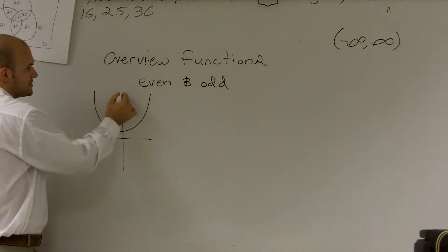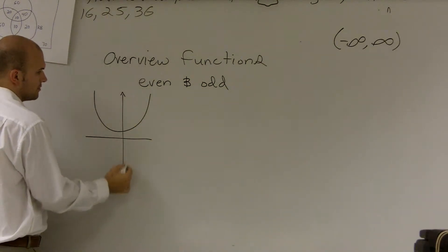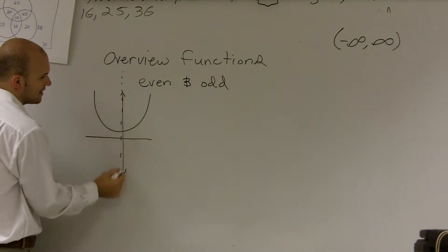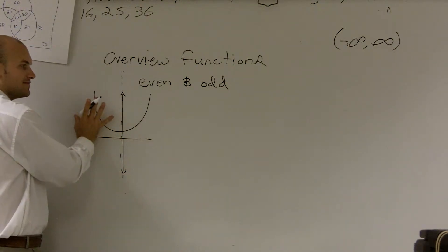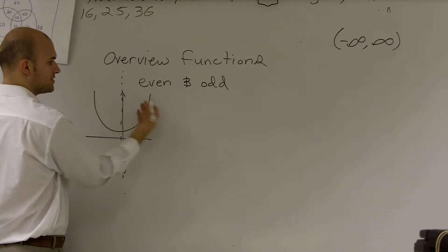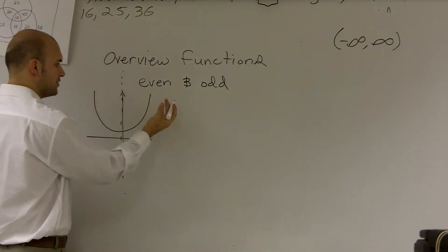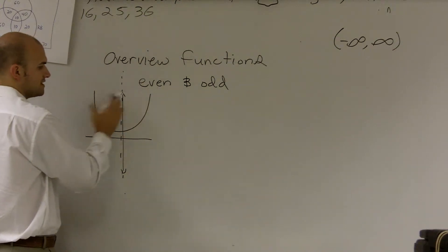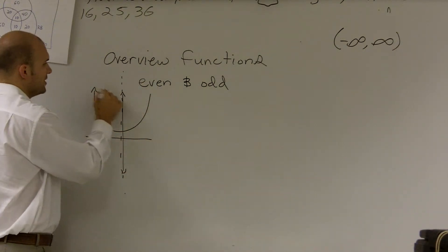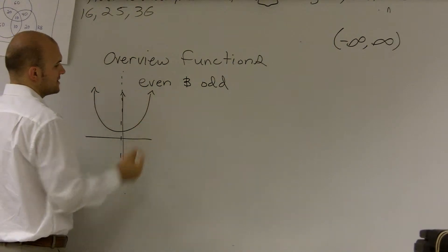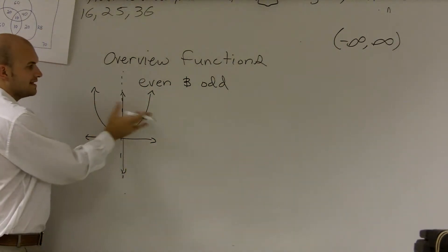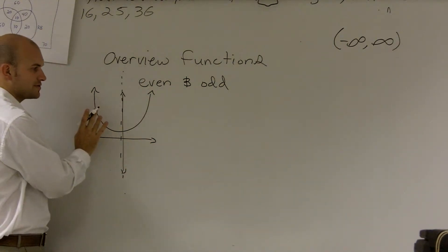And remember, for it to be symmetrical, what we're looking for is just kind of like a dotted line. We want to say everything on the left side is going to be exactly the same on the right side. If you were to think of this as a book and flip it over, you'd notice that these are symmetrical. I know my drawing is not perfect, but you can see that this is going to be symmetrical.